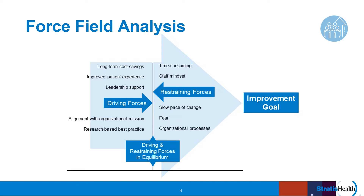What force field analysis encourages us to do is consider those factors and how they are at odds with each other and impact achievement of our goals. The equilibrium within the organization, represented by the vertical line in the diagram, is maintained through a balance of driving and restraining forces. When these forces become unbalanced, that is when an organization will undergo a change process as the driving and restraining forces achieve a new and balanced equilibrium.